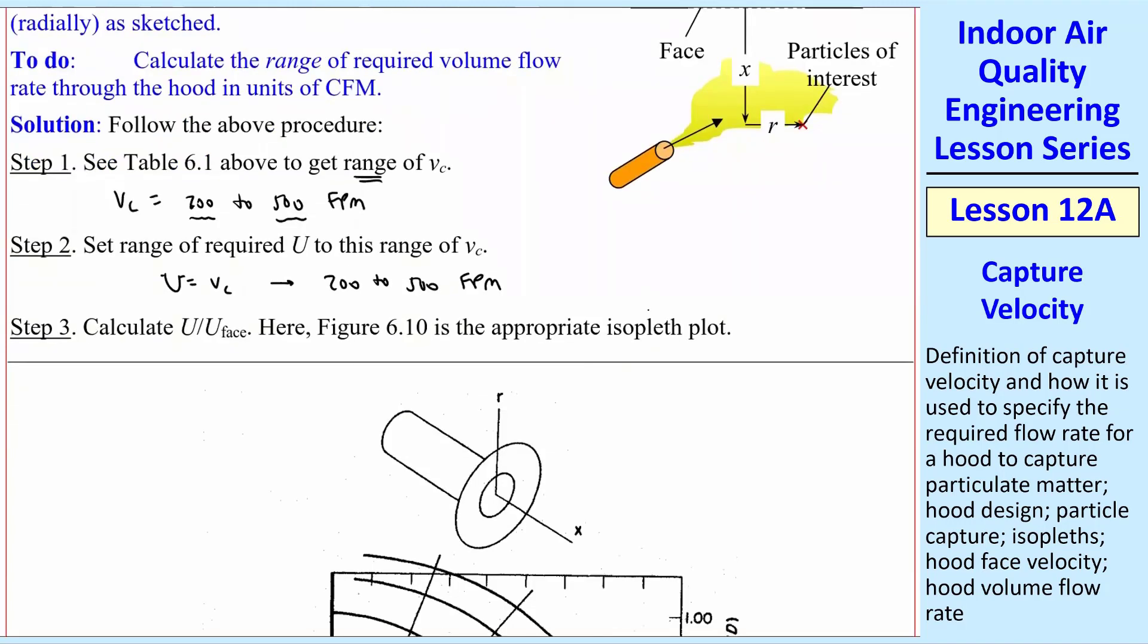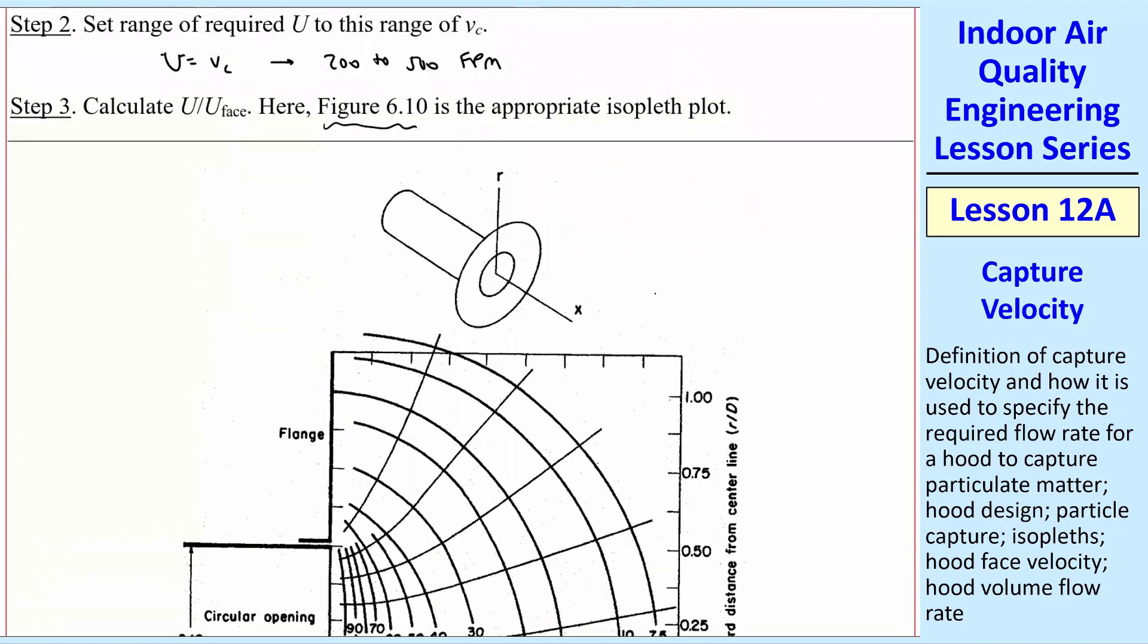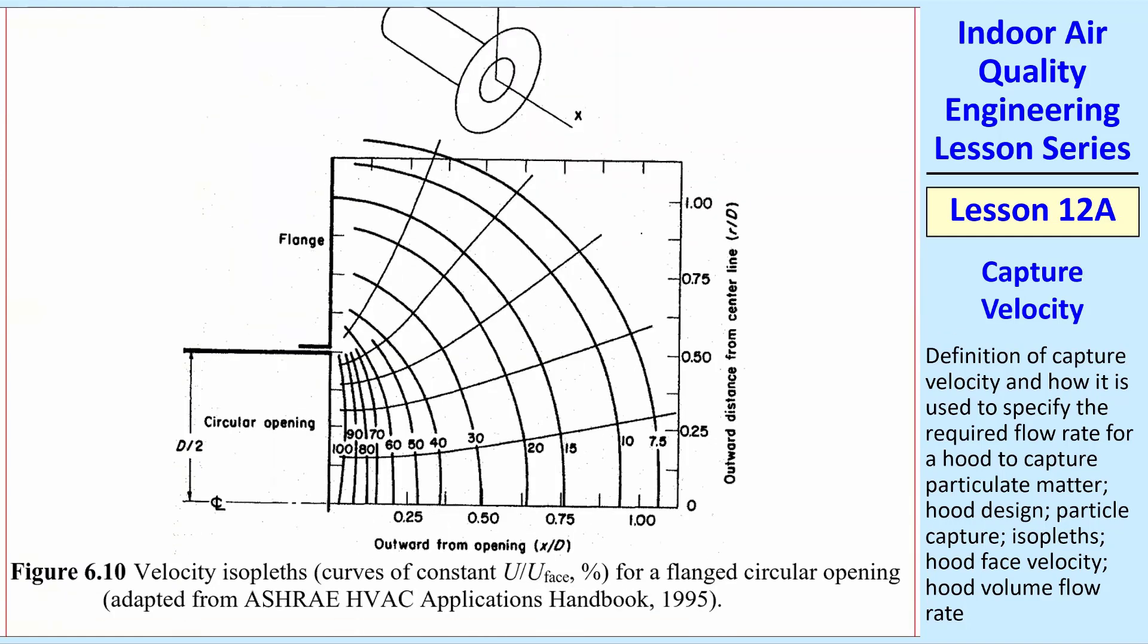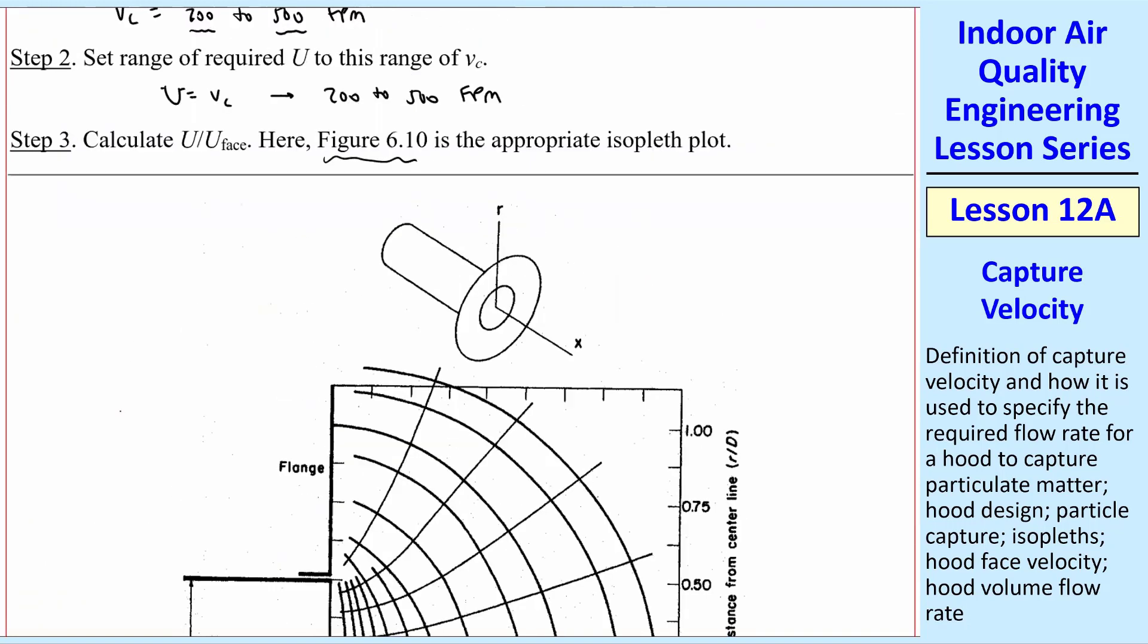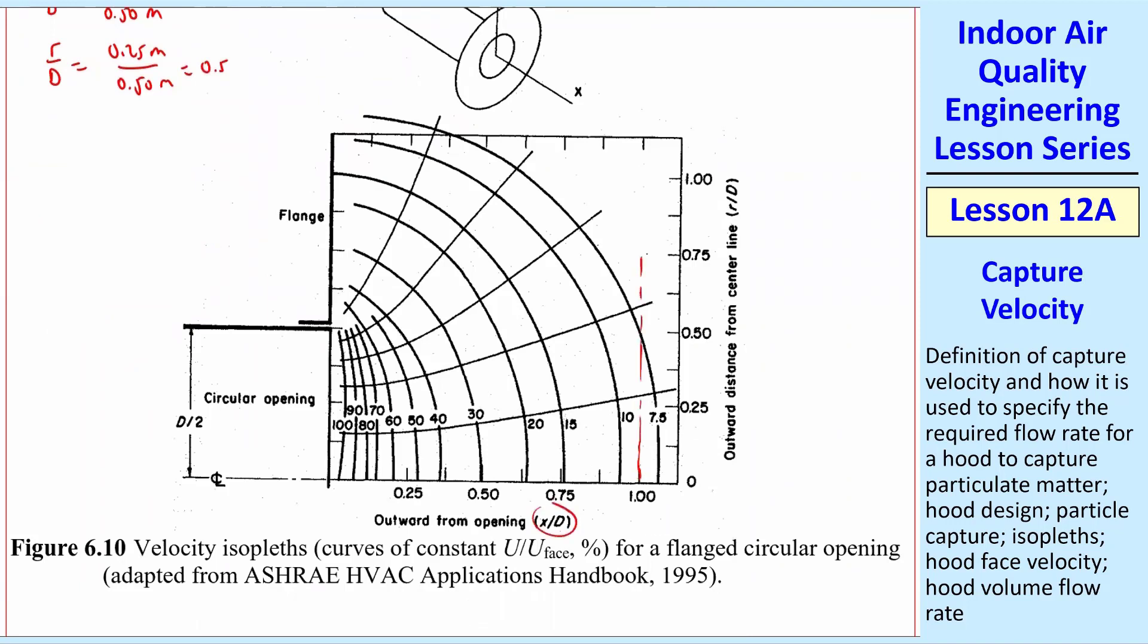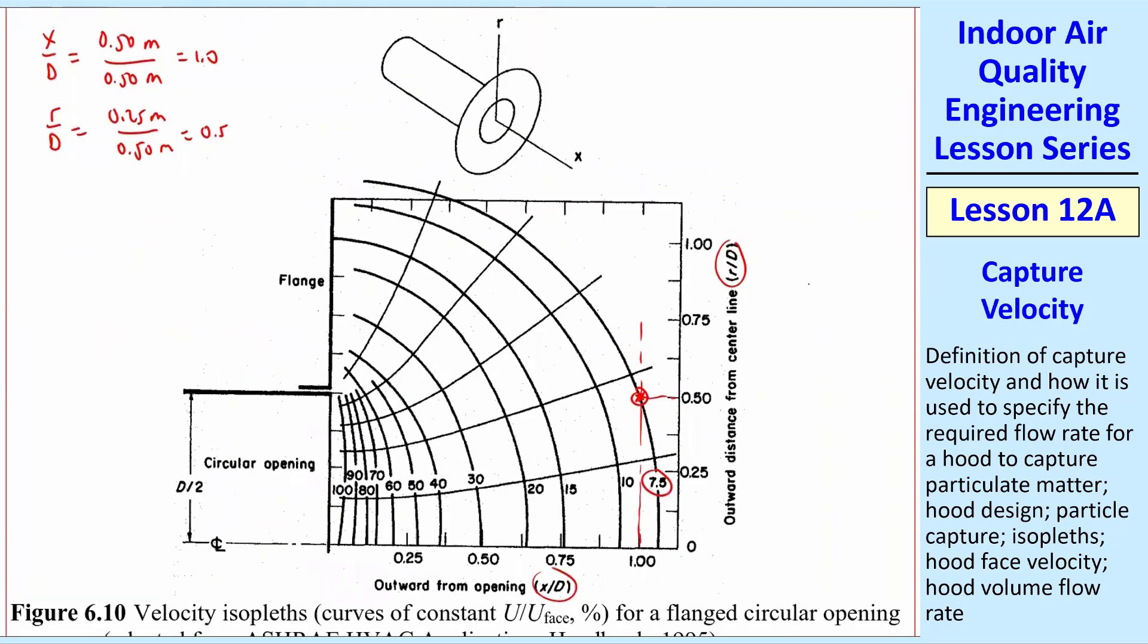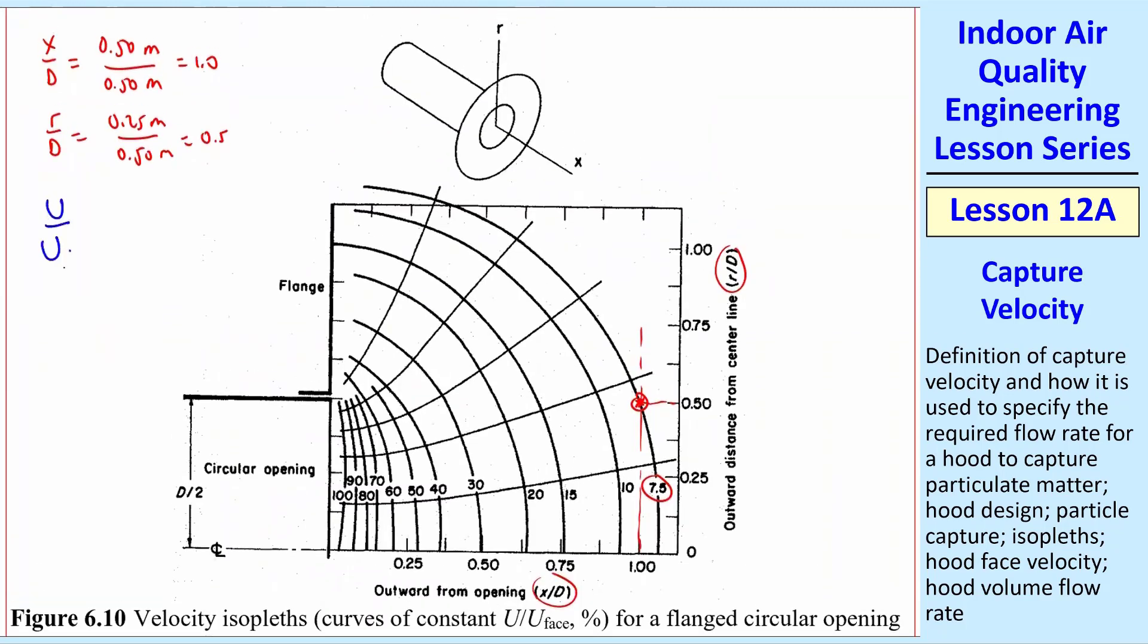Step three is to calculate U over Uface. So you pick the appropriate figure. Remember, we had figures like this 6.10. This is the one with the flange round inlet. So we use this. And since we're off the center line, we have to use the chart here instead of the equation for the center line. In this case, X over D was given as 1.0, and R over D was 0.5. X over D of 1.0, we go up, and R over D of 0.5, you go over. And that intersects almost exactly on this line, which is the 7.5% isopleth. Therefore, U over Uface, which is what we're plotting here, these isopleths, is 7.5% or 0.075.